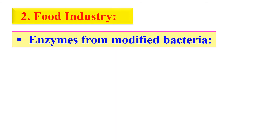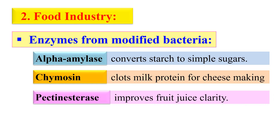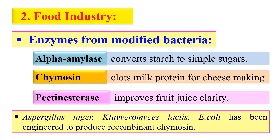In food industries, bacteria have been used for a very long time because they produce certain enzymes, amino acids, and flavoring agents that are helpful in food production. With advances in genetic engineering, new genetic changes can be made in these microbes so that they produce much higher levels of these substances. Genetically modified bacteria used for food products include alpha-amylases, which convert starch to simple sugars; chymosin, which clots milk protein for cheese making; and pectinesterases, which improve fruit juice clarity. Aspergillus niger and Kluyveromyces lactis have also been engineered to produce recombinant chymosin.